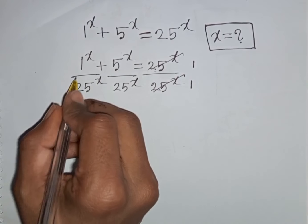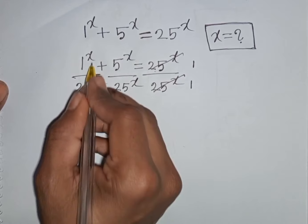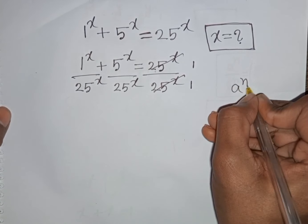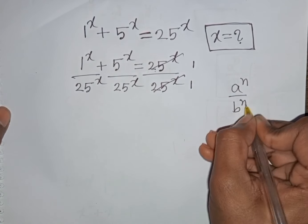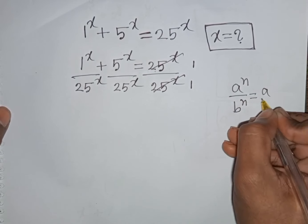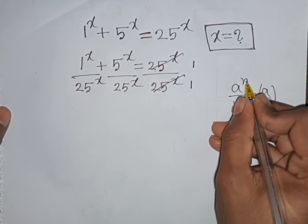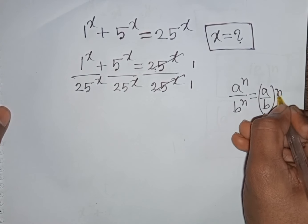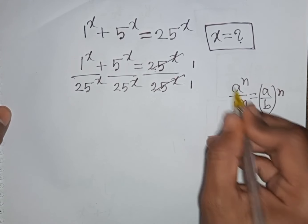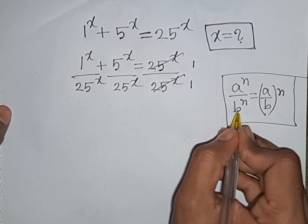Now 1^x divided by 25^x — same power but different base. Remember this formula: a^n divided by b^n is equal to (a/b)^n — same power but different base.